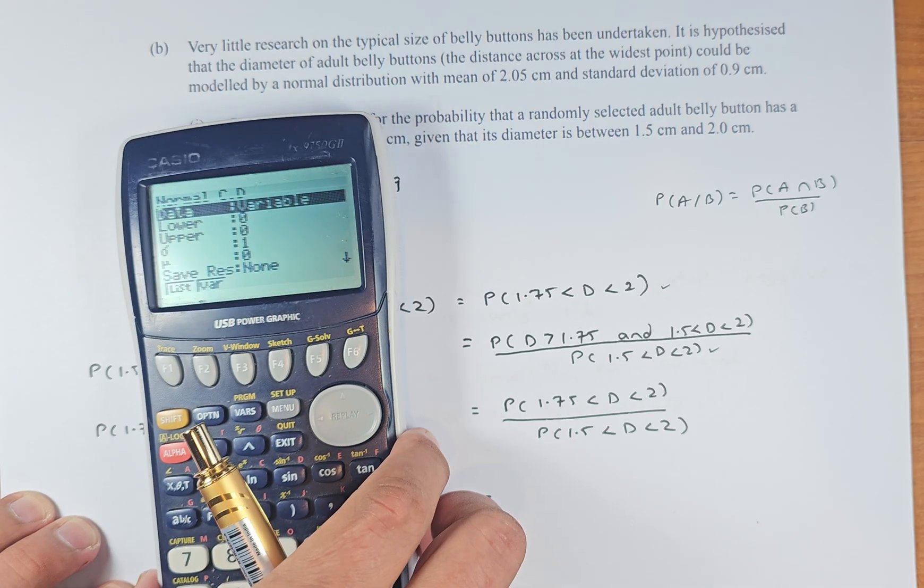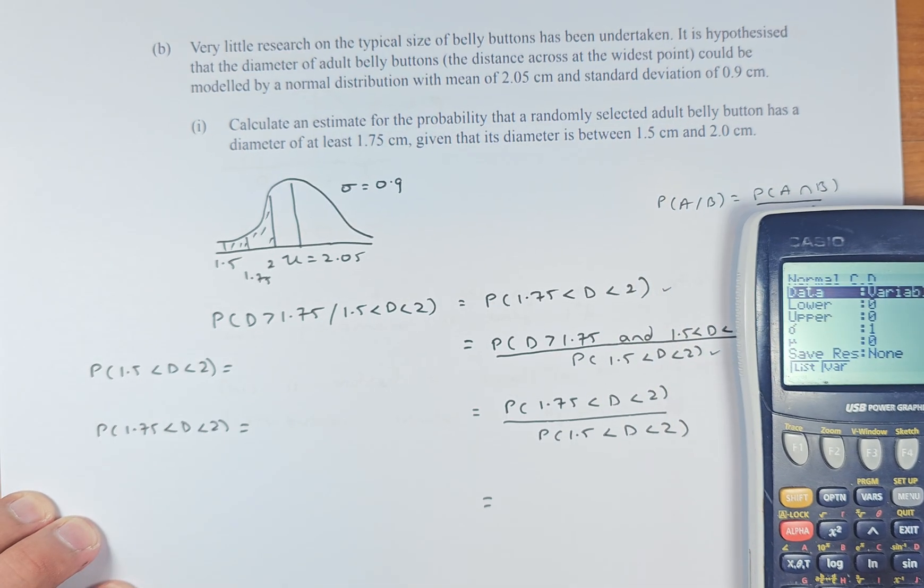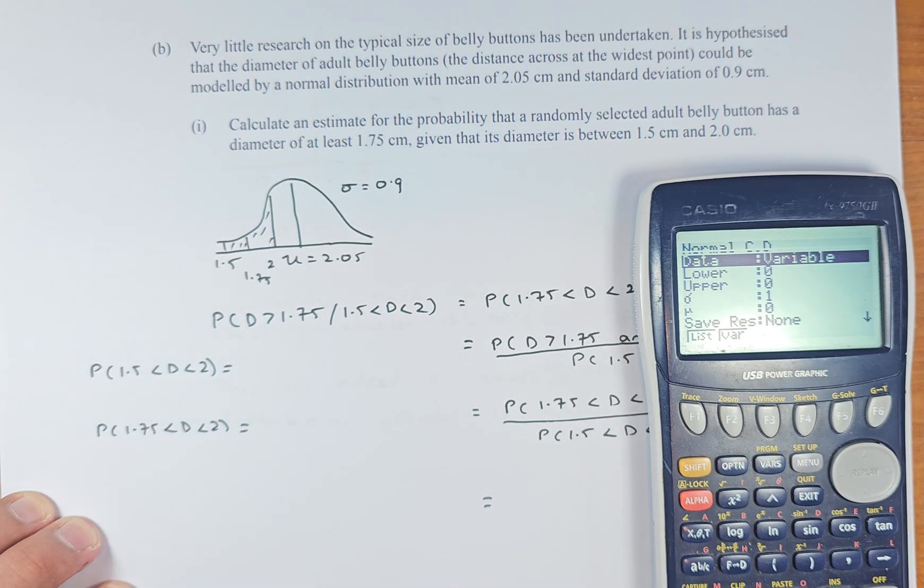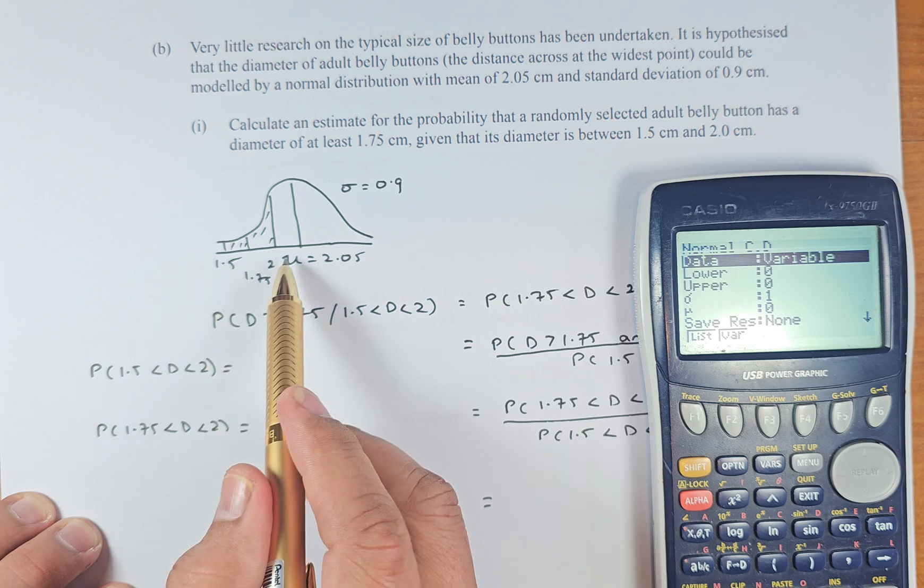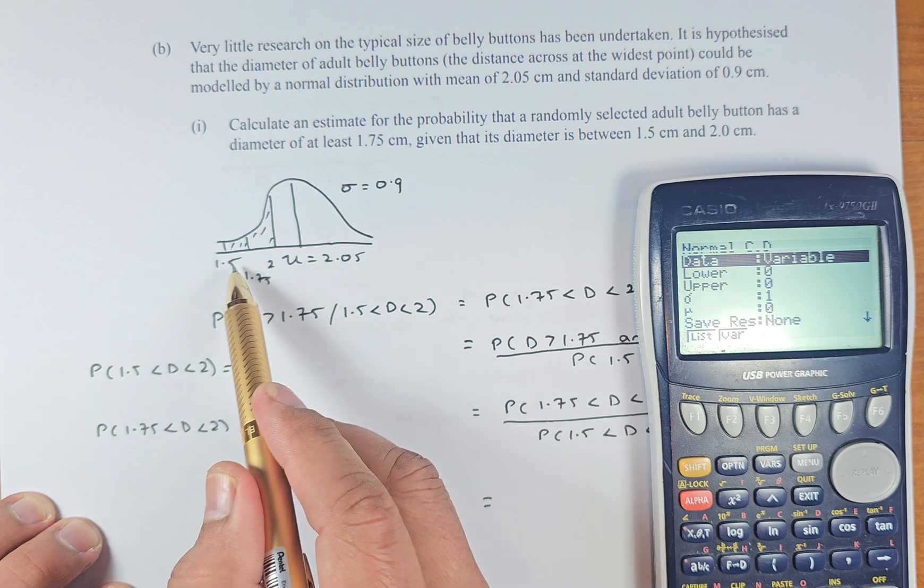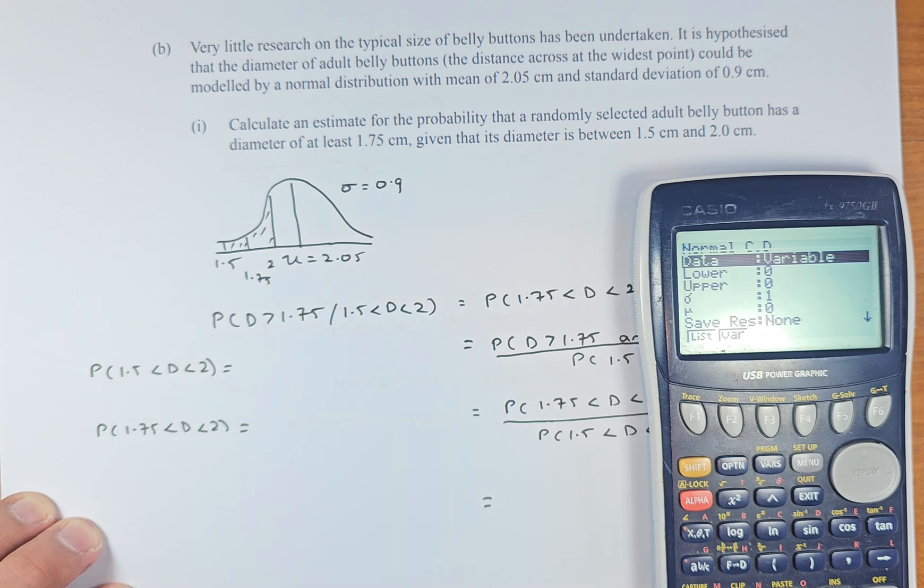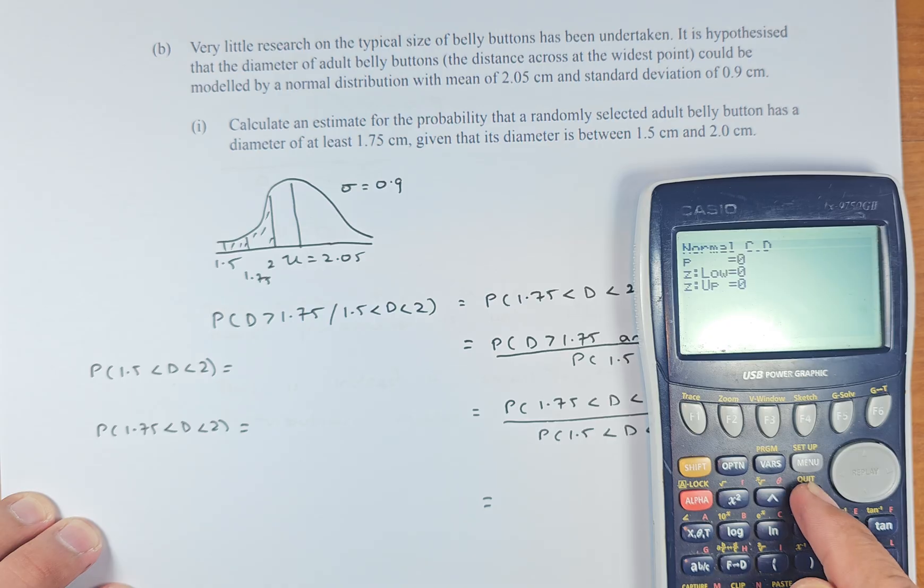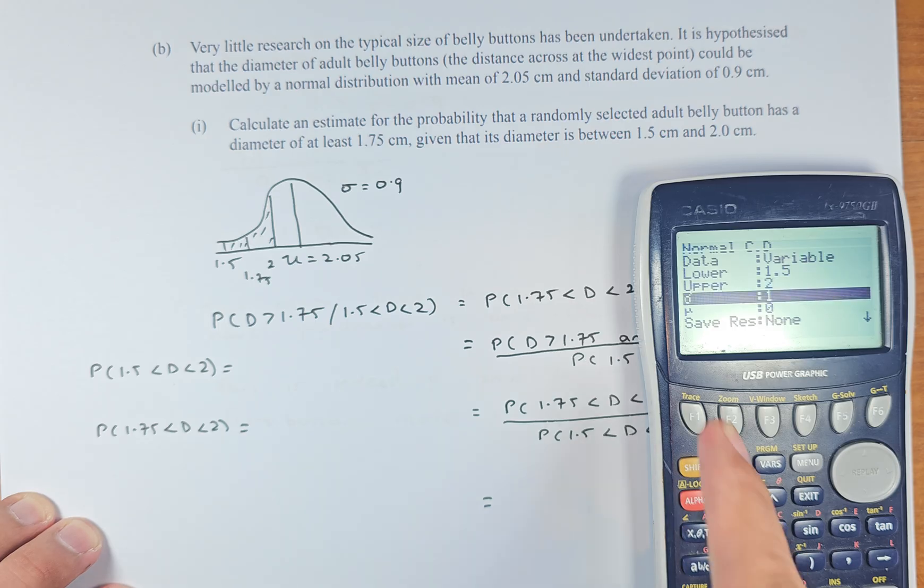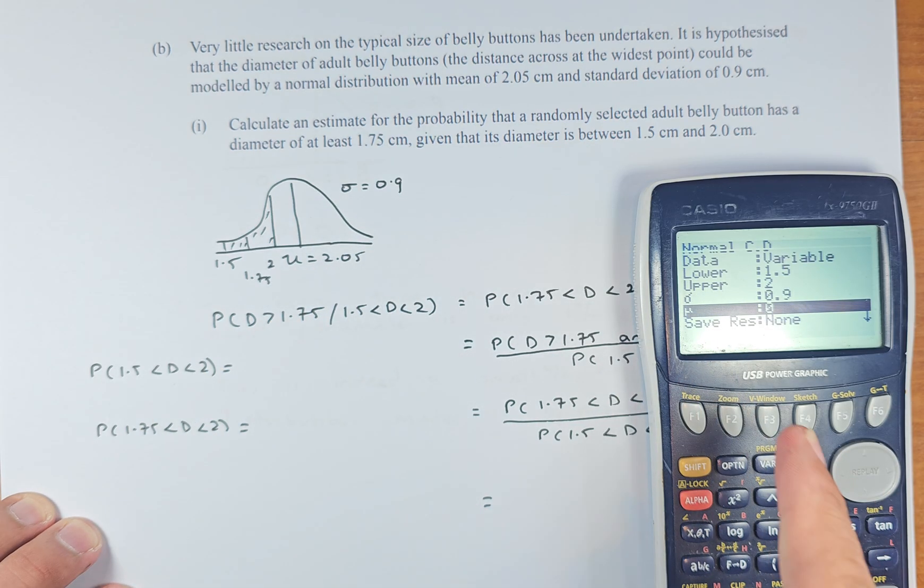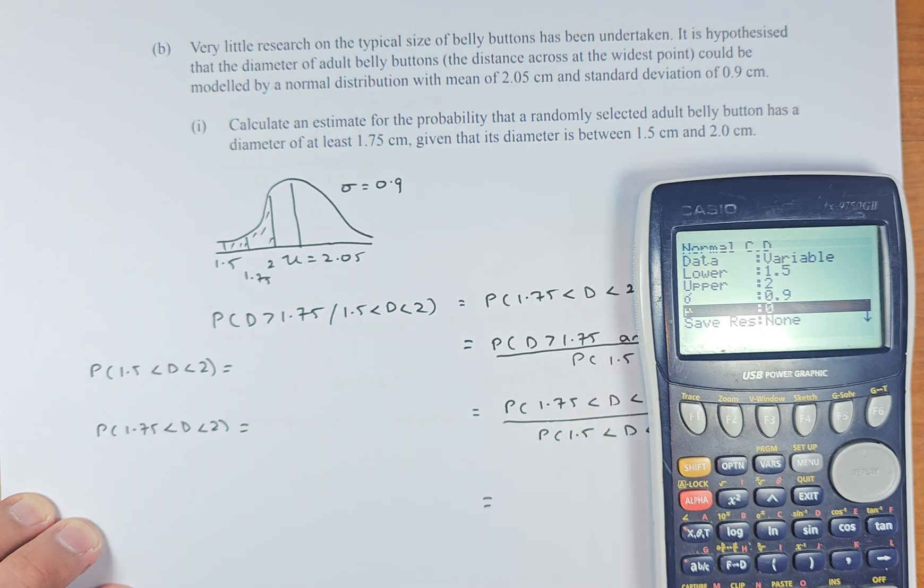Always put in variable, so F2 and we're going to clean the data. So the graph looks like this. So I'm just going to cover it because we need to draw it in the graph. So the lower, to calculate 1.5 to 2, lower is 1.5, so variable, execute. Sorry, I'm going to go down. Lower is 1.5. Upper is going to be 2. Sigma is 0.9. And mu is 2.05. Put in there your calculator, execute and execute again.